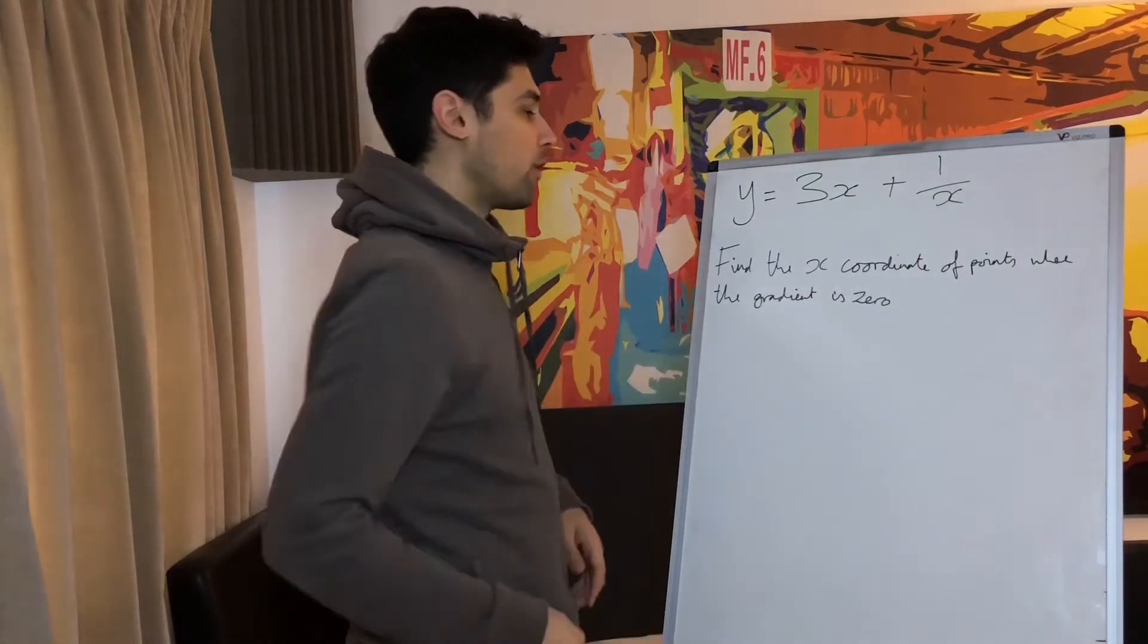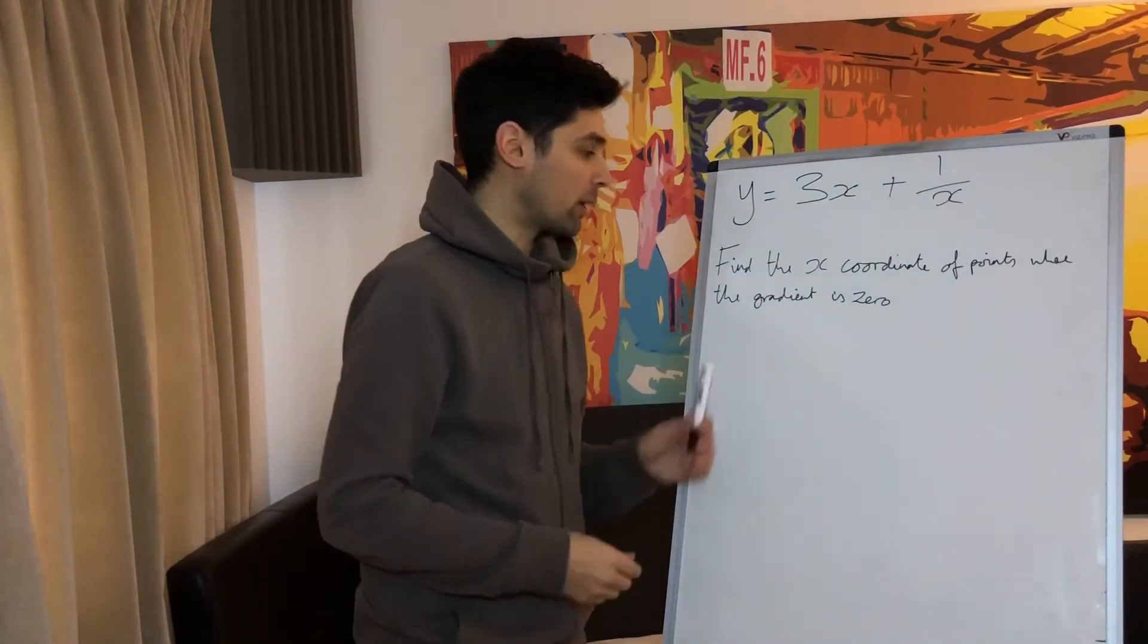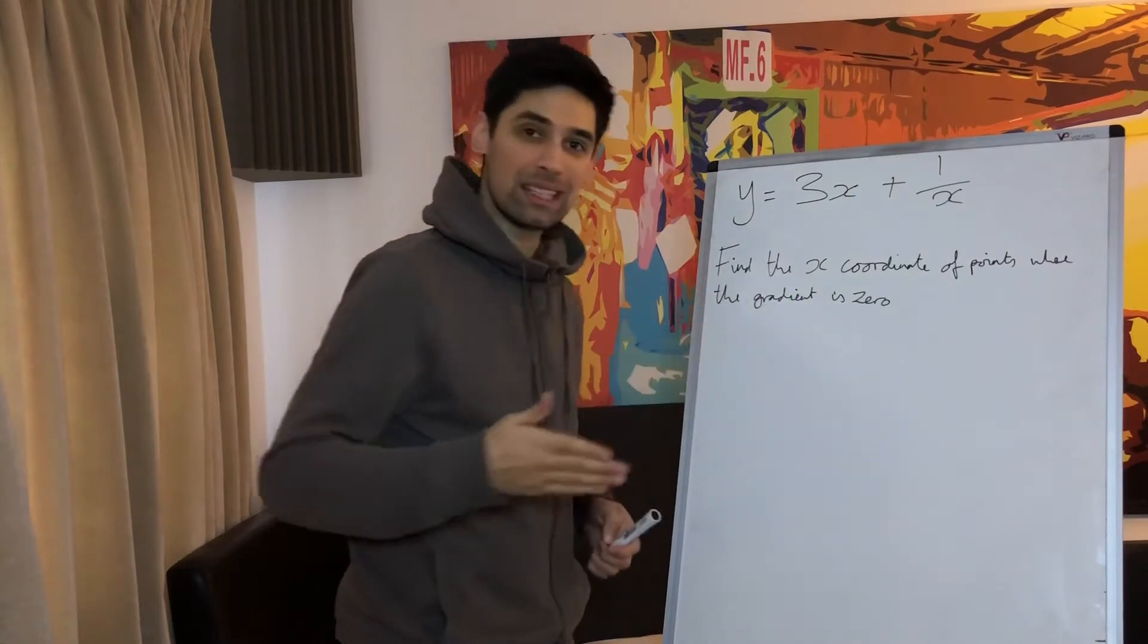y equals 3x plus 1 over x. Find the x-coordinate of the point where the gradient is zero. Yes, my handwriting is bad, shut the fuck up.